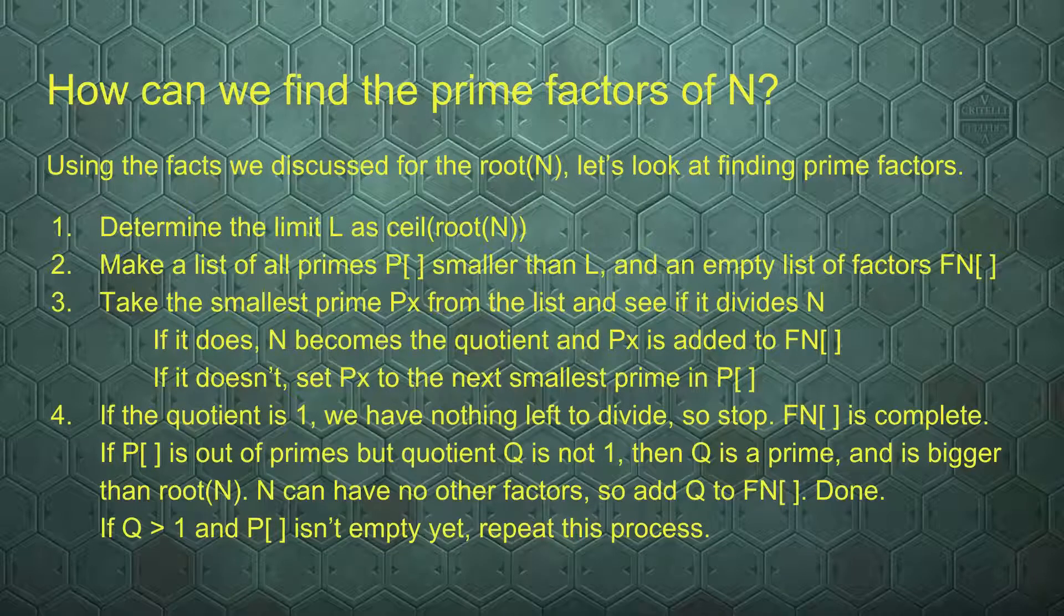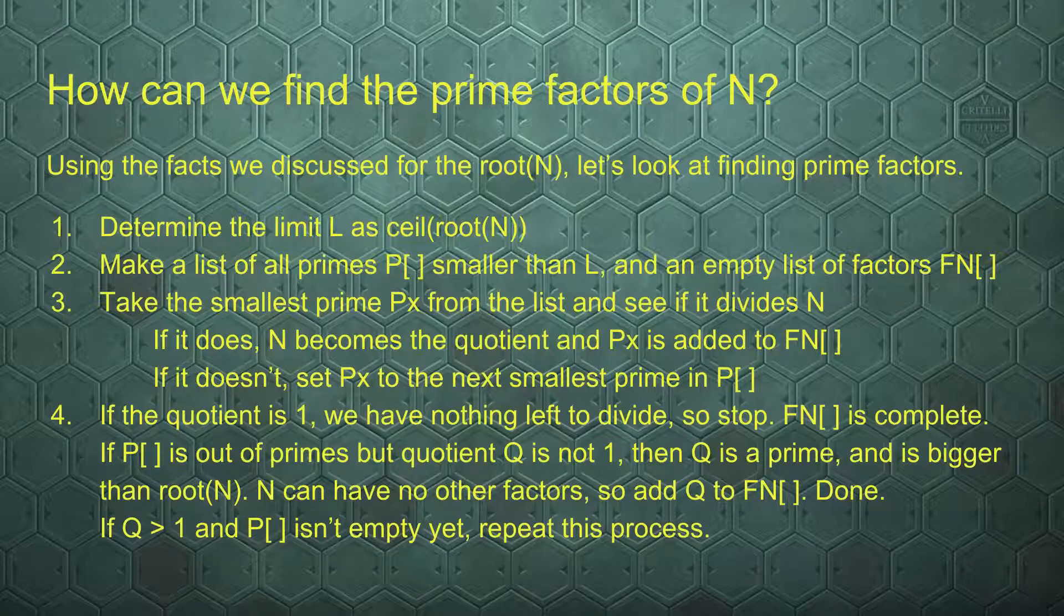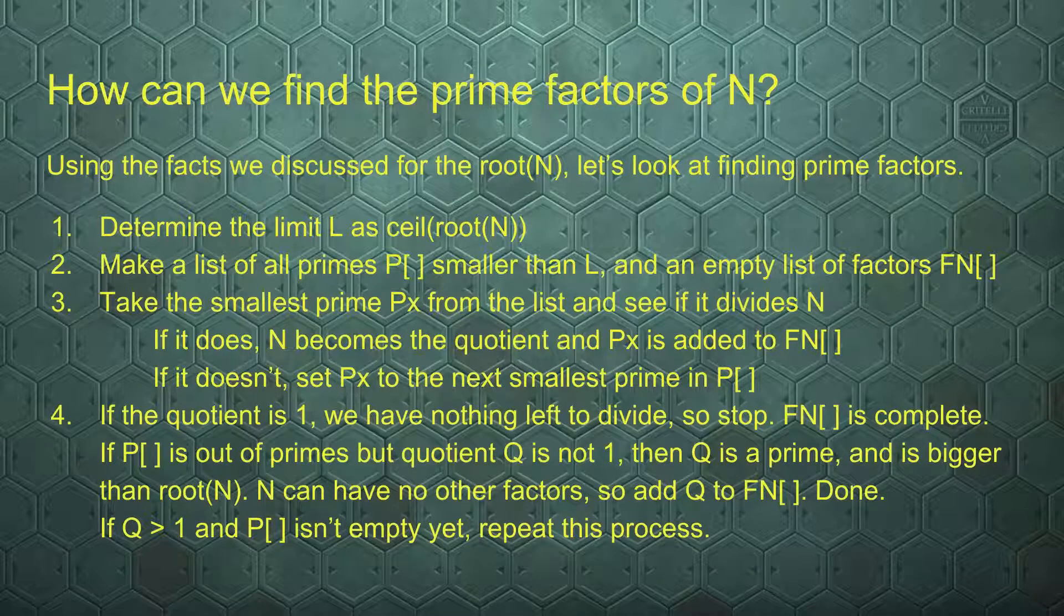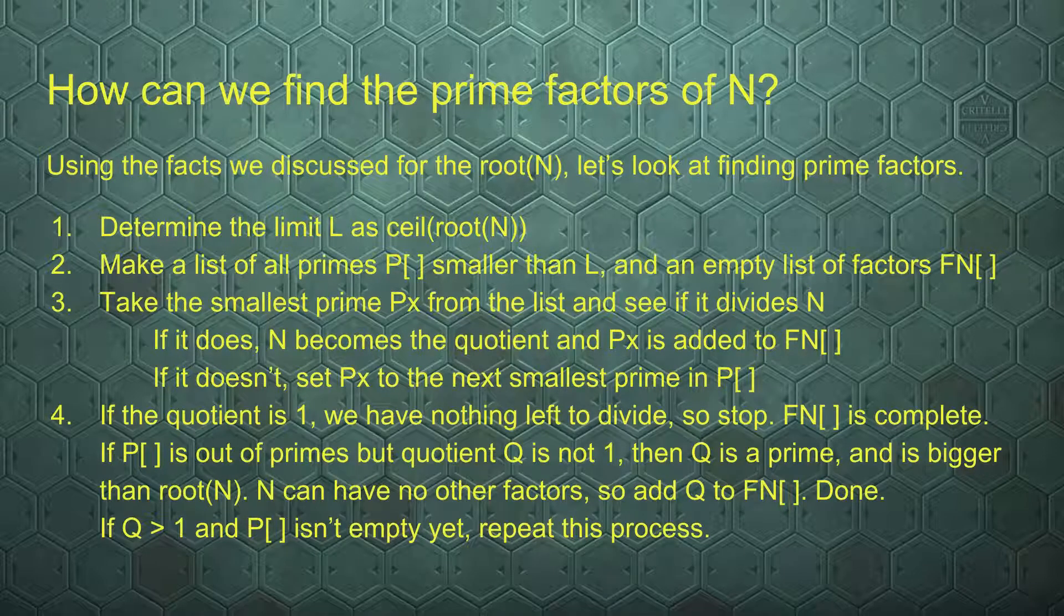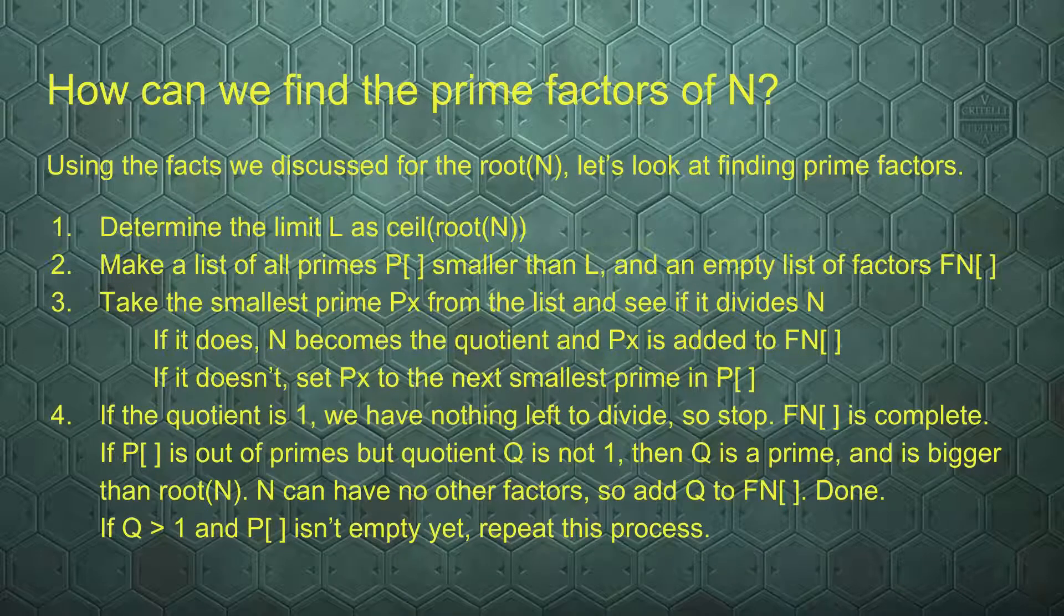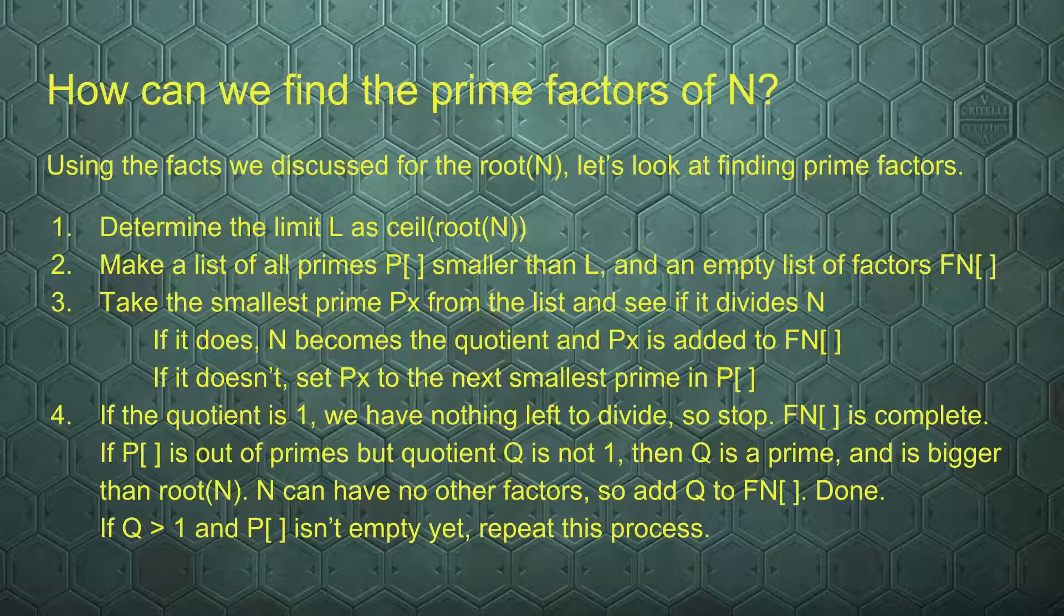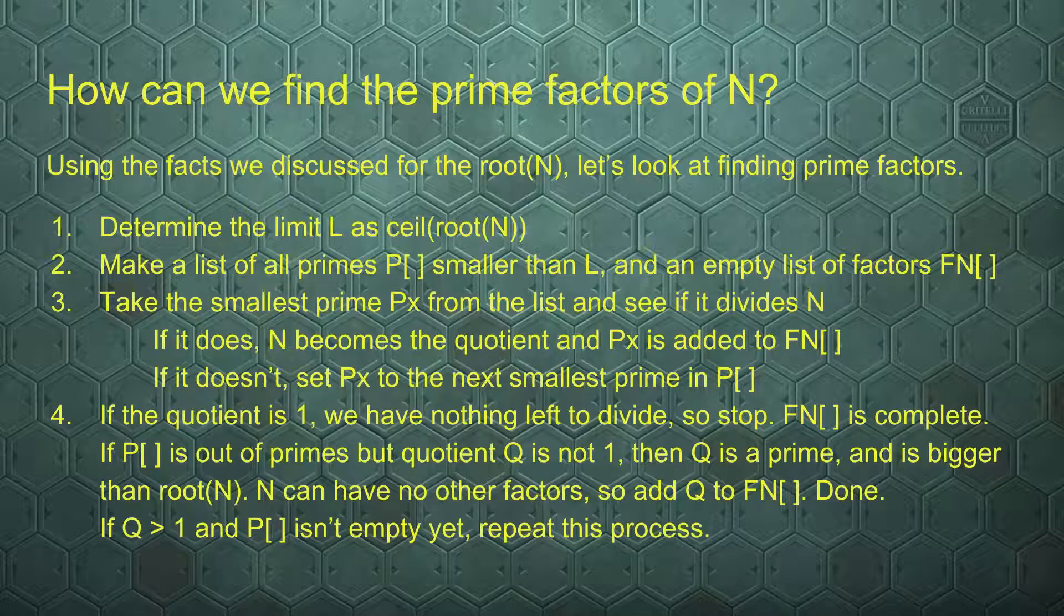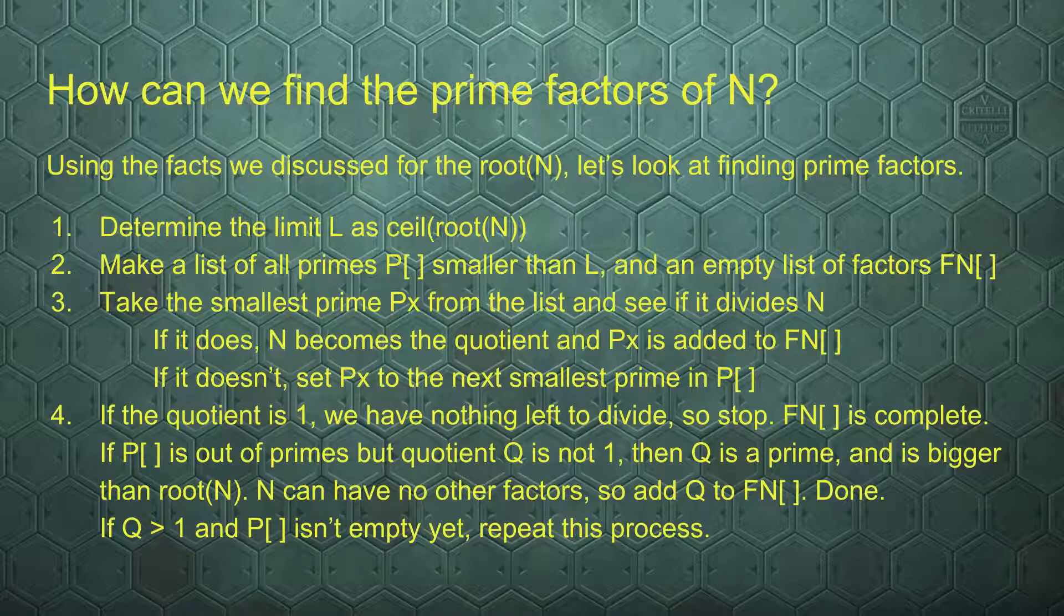How can we systematically look for prime factors of a given number? We have determined a limit to where we can look at primes. The first step is to determine the limit. I have chosen the letter L to denote this, as ceil(root(N)). The ceil function says go to the next integer bigger than the root we find. That's a failsafe for edge cases. Make a list of all the primes smaller than L. That list is called P with square brackets. And create an empty list of prime factors of n, FN, also denoted by square brackets.